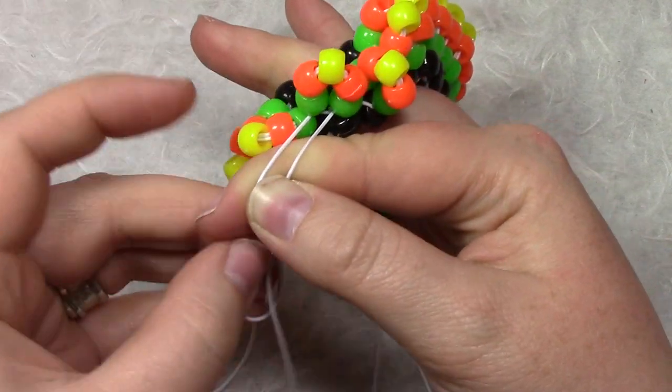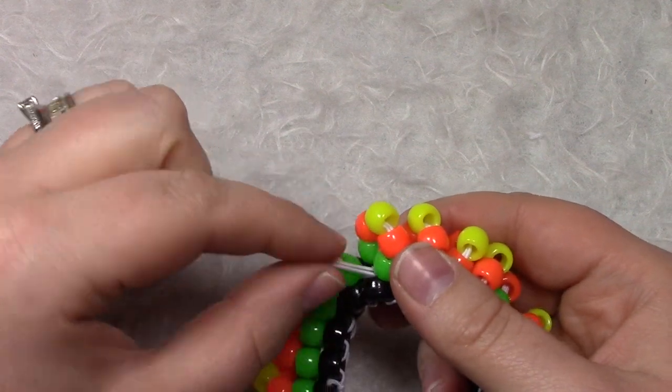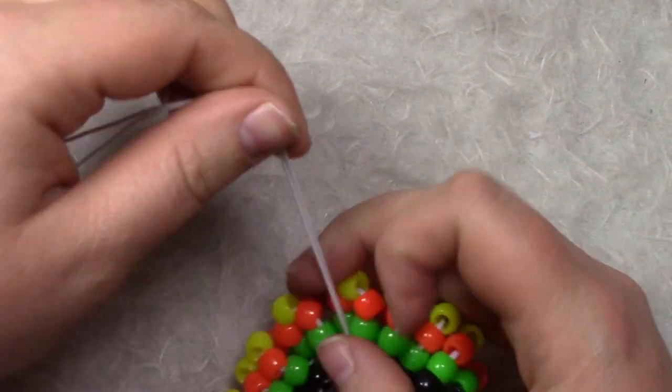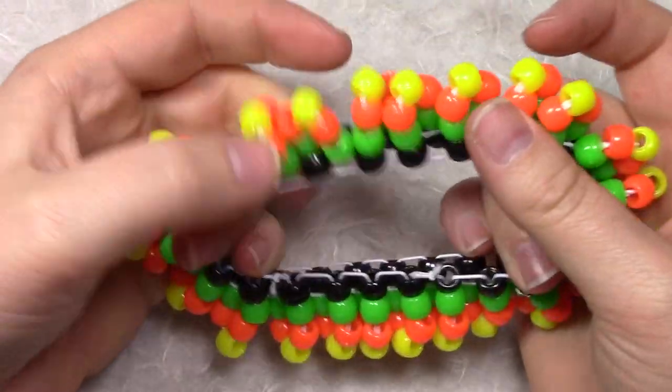And then we are just gonna tie it off with a square knot. And if you wanted to, you could end up hiding the string by pulling it through or wherever you wanted it to go. You might need to adjust it a little bit.